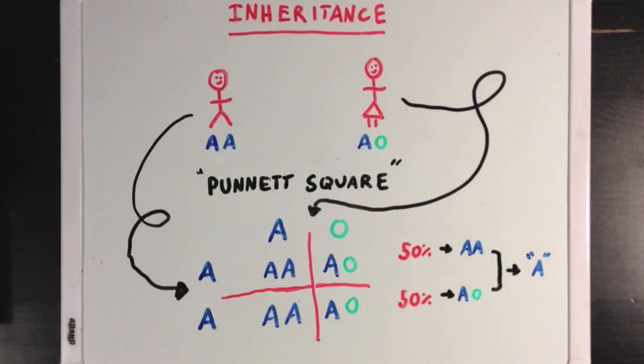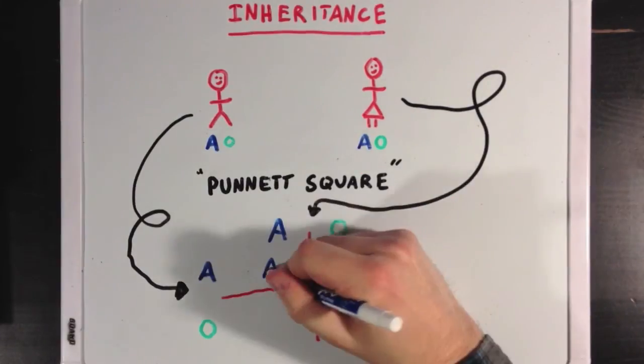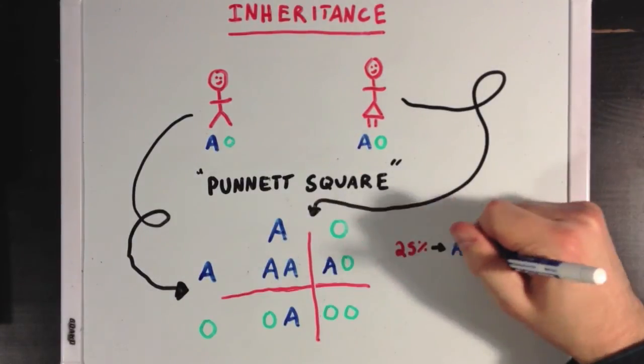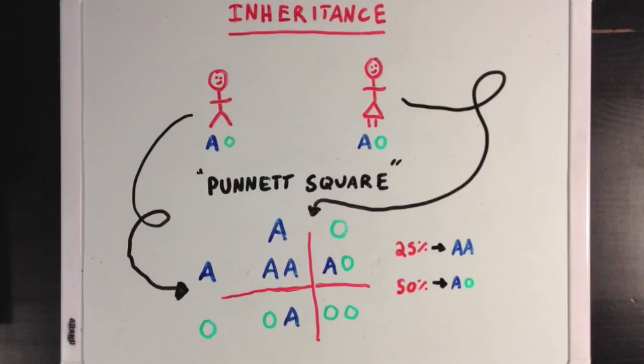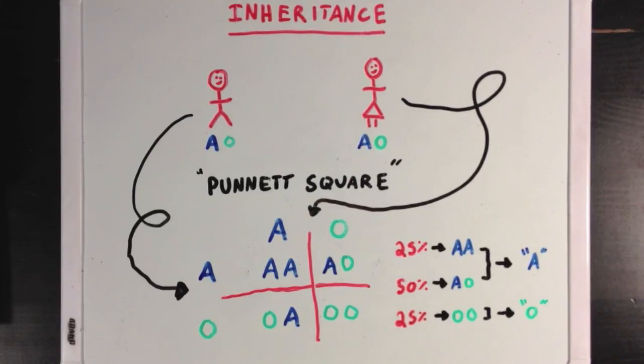Now let's see what happens if we change our father's genotype to match our mother's genotype. Now, only one quarter of the children will have the AA genotype. Half will have the AO genotype, since the order of the two alleles doesn't matter. OA and AO are the same. And one quarter will have the OO genotype. So this means that 75% of the children will have blood type A in their phenotype, since AA and AO make blood type A. But 25% of the children will have the blood type O phenotype, since OO makes blood type O.